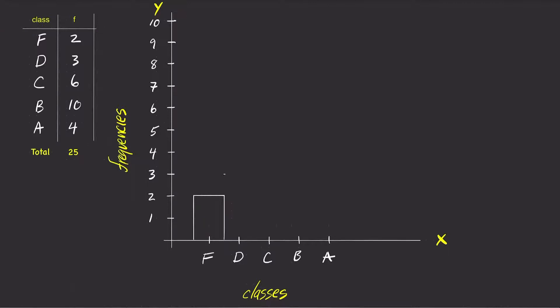For the second class D, the frequency is three. So draw a rectangle with a height of three on top of D. Notice how the tick D is in the middle of each side of the rectangle, and there is no gap between the two rectangles.